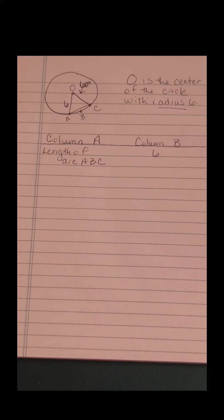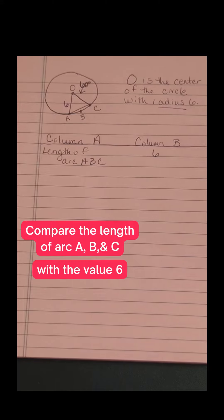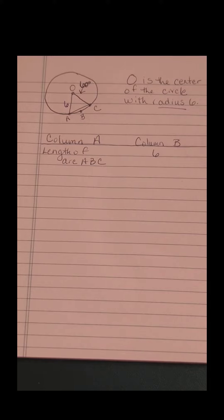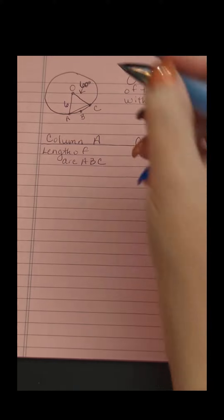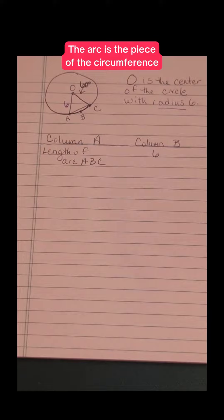Our job is to compare the length of arc ABC with the value 6, which happens to be the radius. So what do we know about that length of an arc? The arc is the portion on the outside of the circle - it's a piece of the circumference.